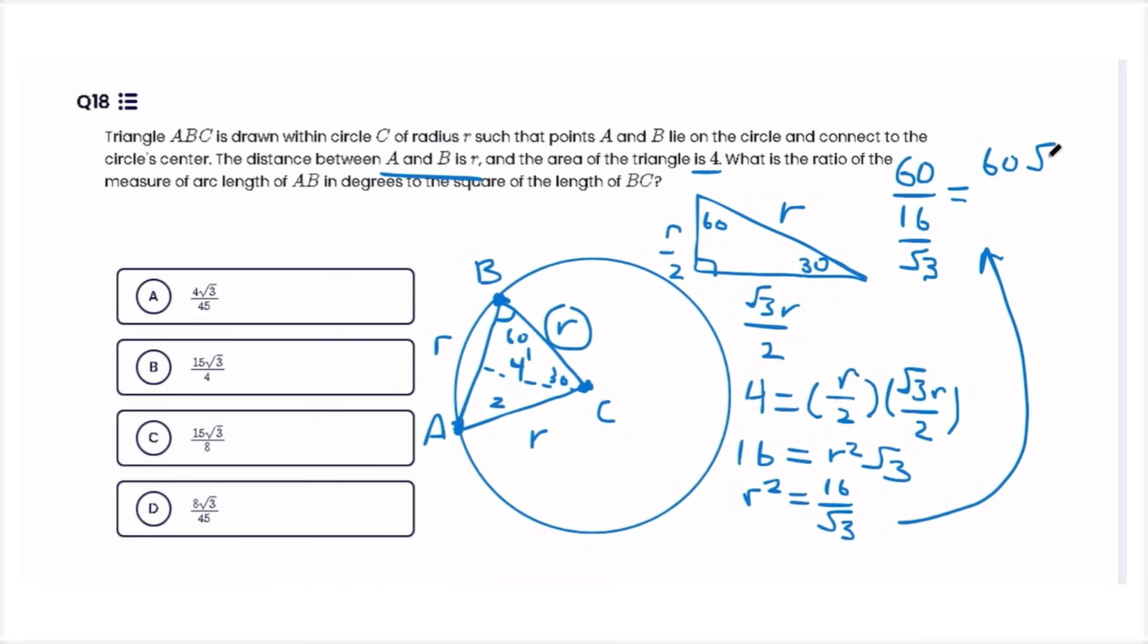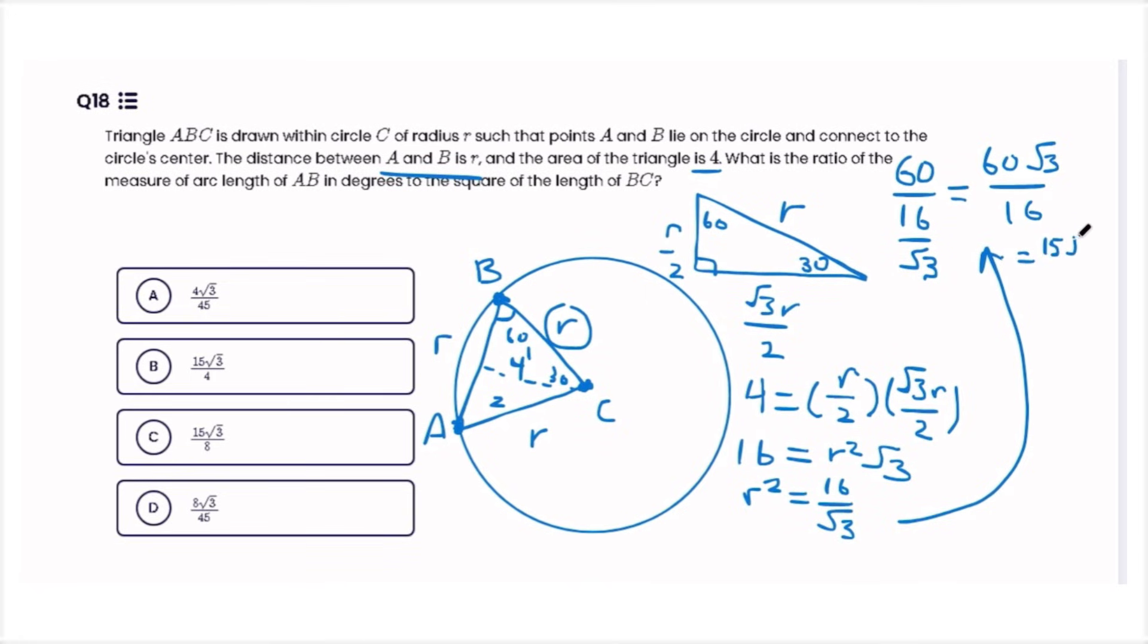So to get the ratio, we divide 60 by 16 over root 3, and we end up getting 15 root 3 over 4, which is equal to B. If you thought this video was helpful, let me know in the comments down below, and make sure to click the link in my description to check out Cracked It. If you want more videos from me, make sure to subscribe and watch these recommended videos from my channel.